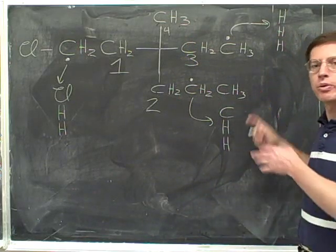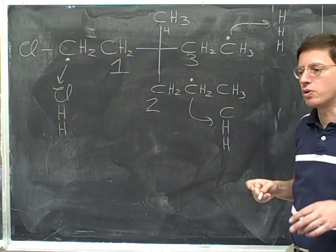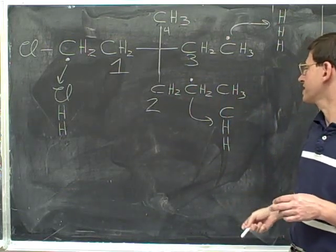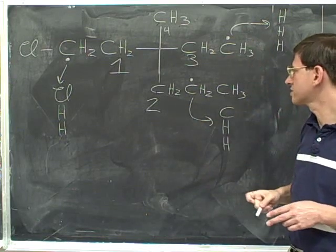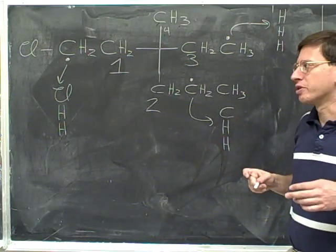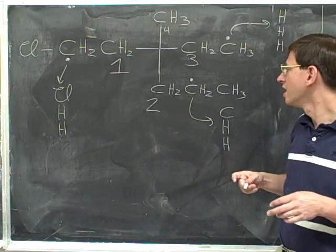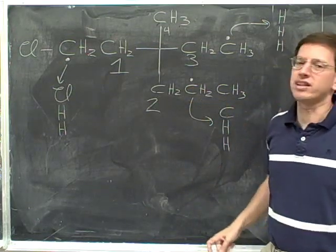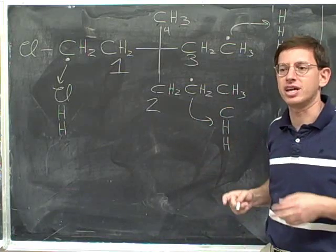The notation I've written on the board is what I recommend when you're first learning how to do these problems. Use a dot to indicate the atoms you are comparing, and if you have to move further out, move your dots further out. Keep writing down a list of the three atoms each dotted atom is connected to, and use arrows to show where your lists are. If you have many ties and keep moving further from the stereocenter, erase your previous dots and lists to keep things clean. Once you've had a lot of practice, you'll be able to do a lot of this in your head, but while these problems are difficult, it's a good idea to imitate this notation.